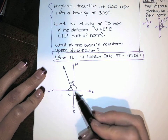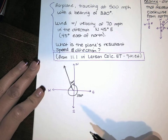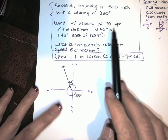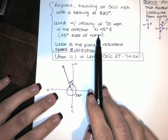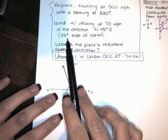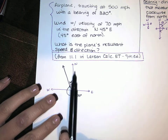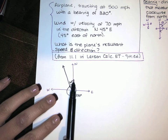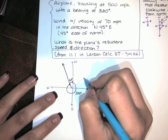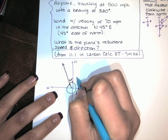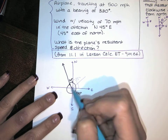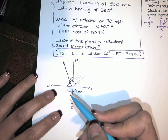The airplane is traveling with a velocity of 500 miles per hour at that bearing. We're also told that there is wind with a velocity of 70 miles per hour acting in the direction of 45 degrees east of north. That's how we interpret this. So here is our north-south line — 45 degrees east of north is right over here, and my velocity from the wind is 70 miles per hour.